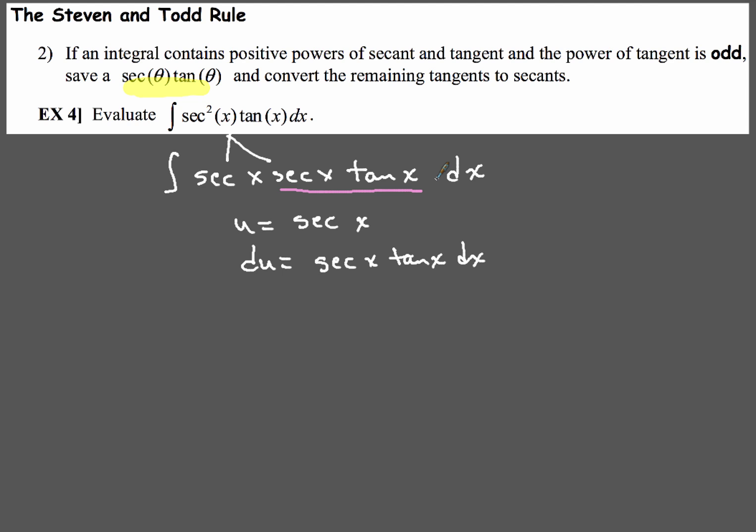So when we integrate that, again, we're going to have almost the same thing here. We're going to have the integral of u du, which very nicely is just going to work out to be 1 half u squared plus c. And then when we back substitute in, we're going to have 1 half secant squared x plus c.